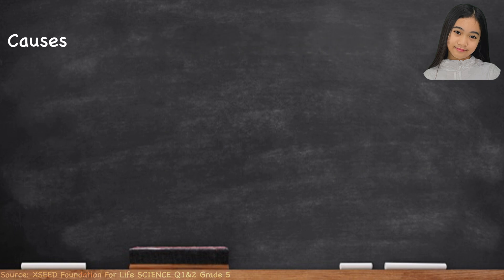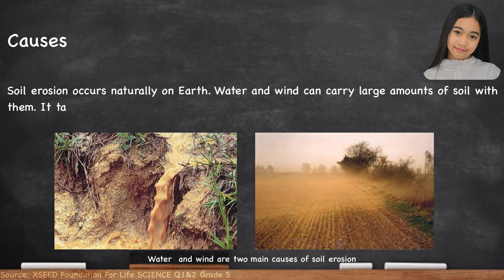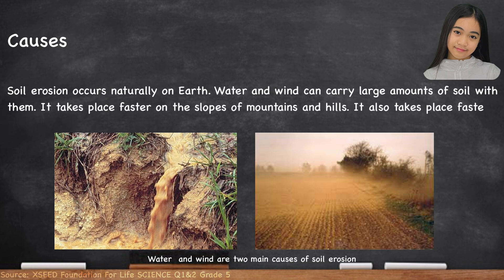Causes. Soil erosion occurs naturally on Earth. Water and wind can carry large amounts of soil with them. It takes place faster on the slopes of mountains and hills, and also faster on land without trees.